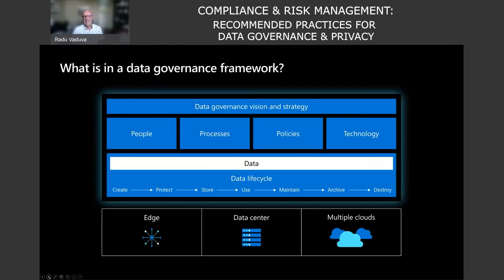Moving into the data governance framework: the top area shows data governance vision and strategy — people, process, policies, and technology — those are really the components of a governance framework. The middle piece showing the data lifecycle is what you need to think about for the lifecycle of data in an organization, whether structured or unstructured. Data gets created, and when you create it you need to protect it, understand what kind of data was created, how sensitive it is, how many people need access. You store it, you use it — access permissions and common vocabulary need to be understood. How do you maintain clean data?